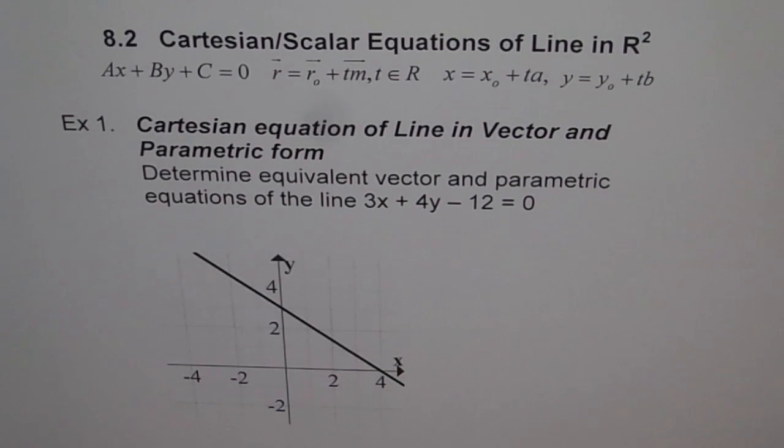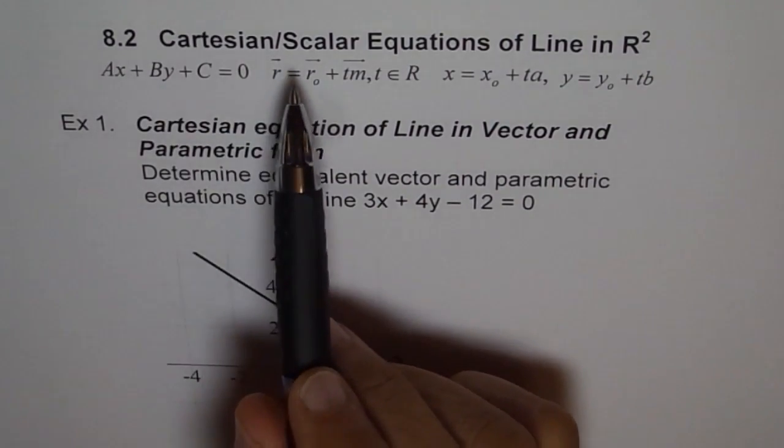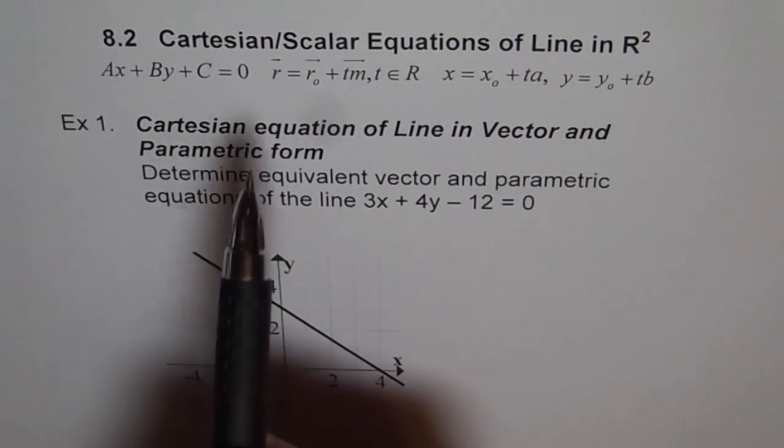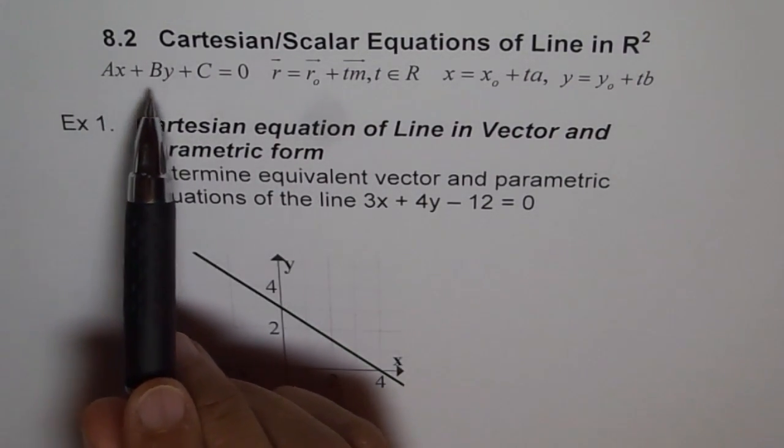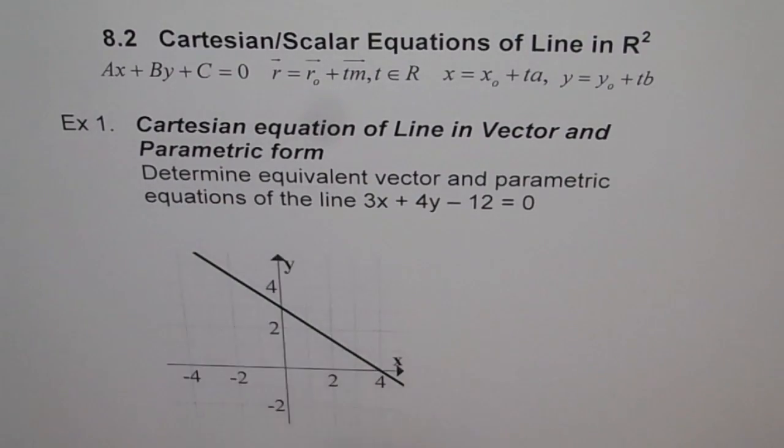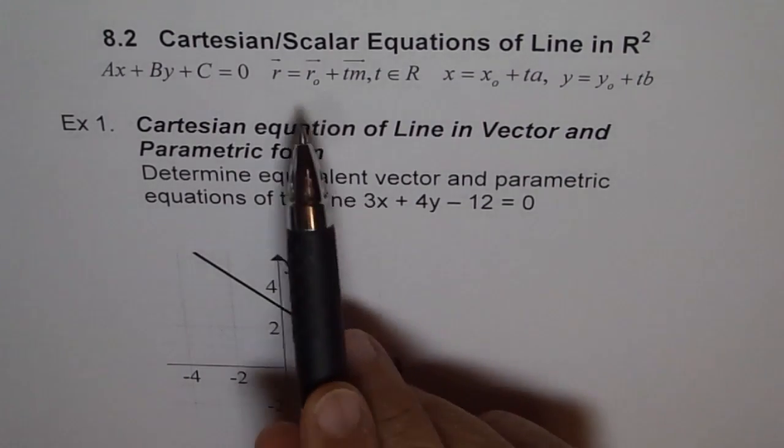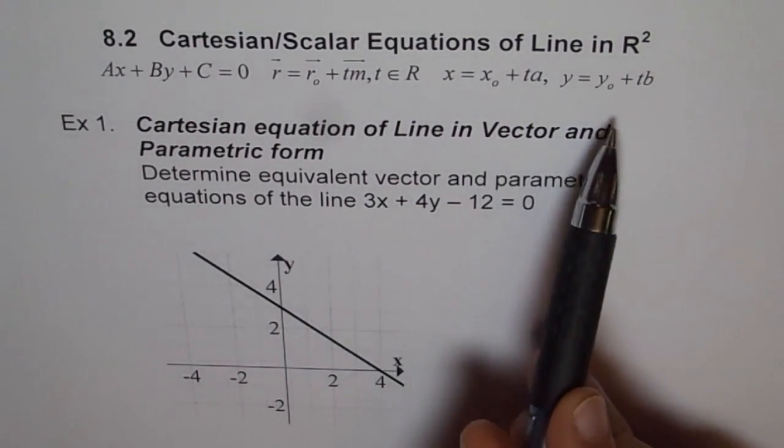Chapter 8.2: Cartesian scalar equations of line in R². Cartesian equations are also called scalar equations. They are like our standard form equation AX plus BY plus C equals 0. Now, we already have learned about our vector equations and the parametric equation.